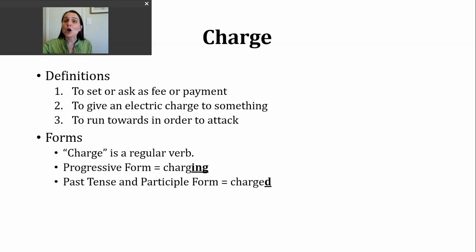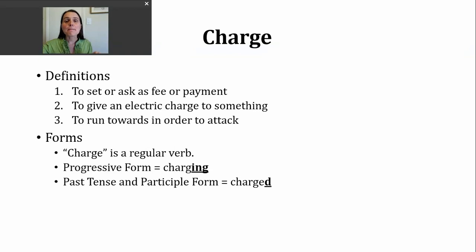You should know that charge is a regular verb. To make the progressive tense, you first need to drop the e and then add -ing to form charging. The past tense and participle forms are made by adding just the letter d, since this verb already ends in an e. The base verb charge makes a voiced sound, so our past tense ending is going to make a d sound: charged.